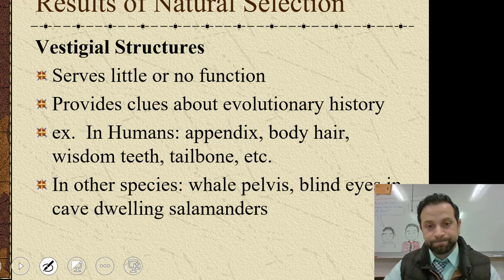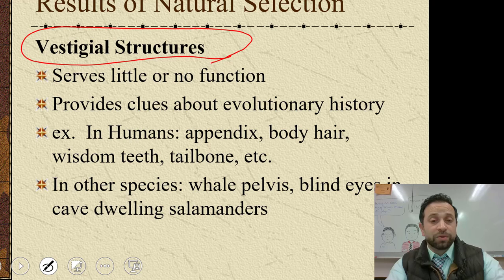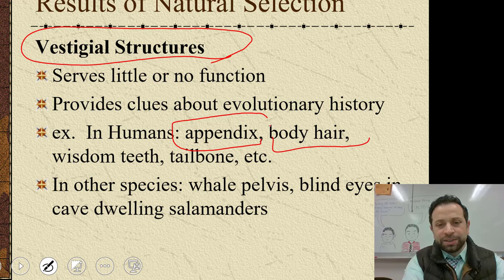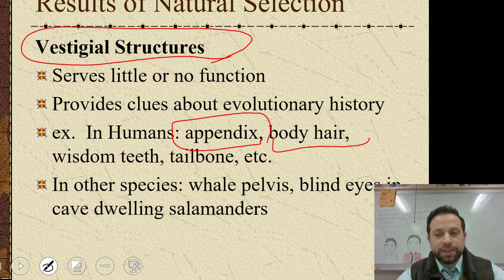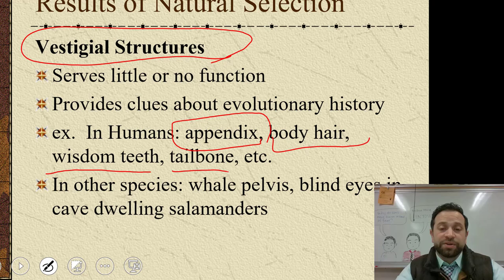Vestigial structures — a term we're going to talk about a lot in this unit. A vestigial structure is a structure you have in your body that has little or no function, and it gives you clues about our evolutionary history. In humans, examples include body hair, the appendix, wisdom teeth, and the tailbone. In other species, the pelvis of a whale is considered a vestigial structure.